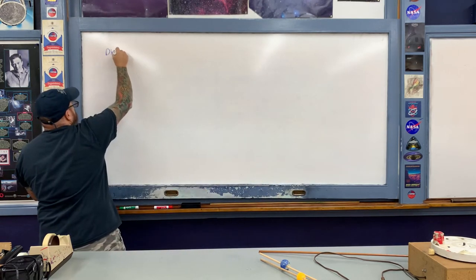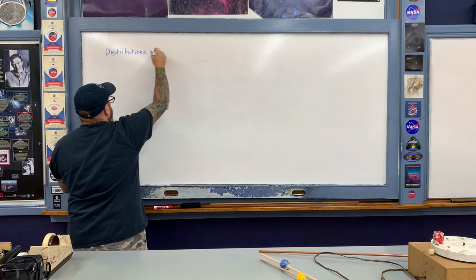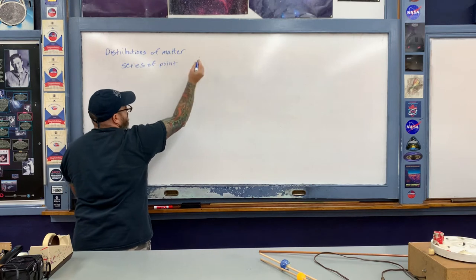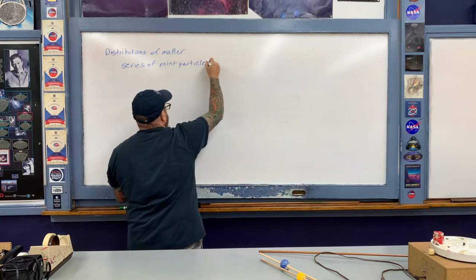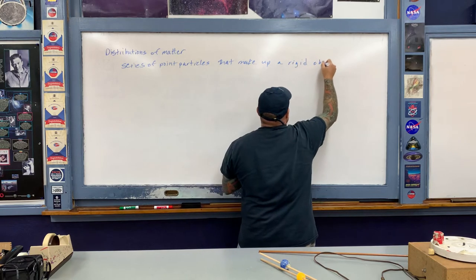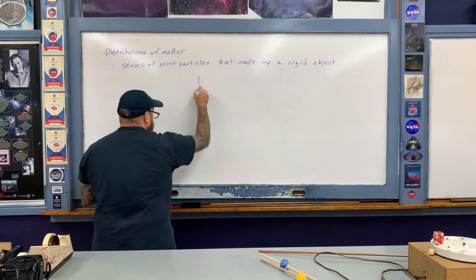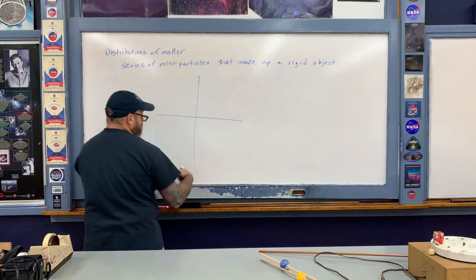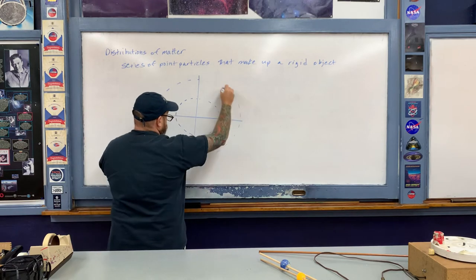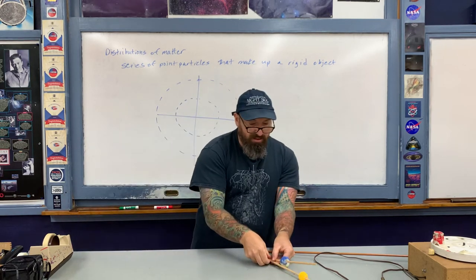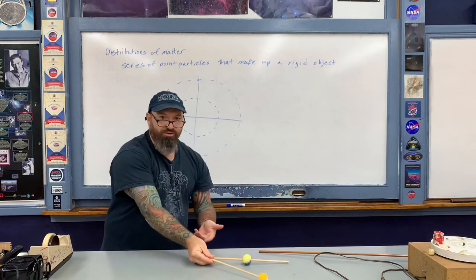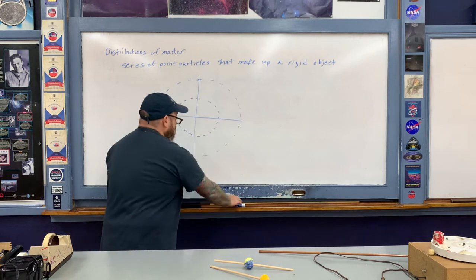We begin with a series of point particles making up a rigid object. Using the sticks with styrofoam balls to conceptualize: one ball circulates at one radius and another ball circulates at a different radius. These particles form a rigid object — they rotate together; they are not on independent tracks. They make up a single rigid body.